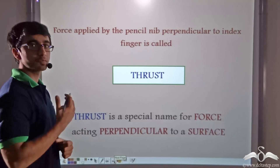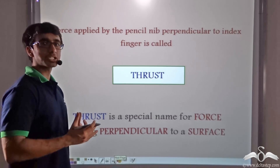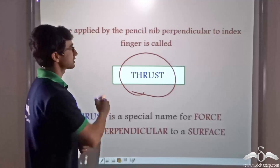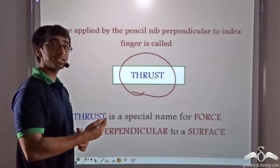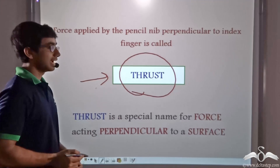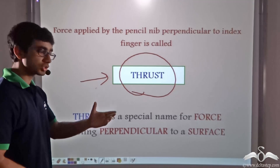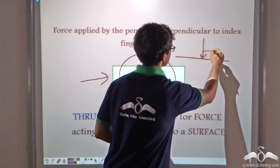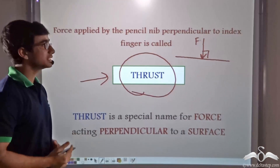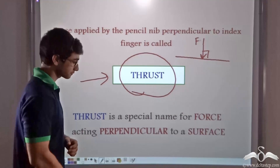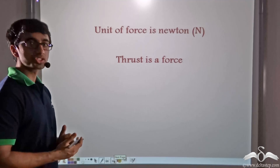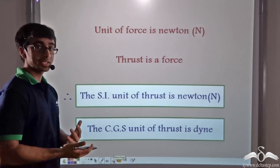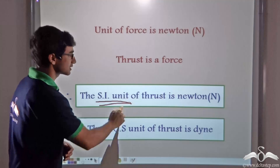This force that is perpendicular to your finger has a particular name. In fact, any force that acts perpendicular to any surface has a name, and that name is thrust. So the force applied by the pencil nib that is perpendicular to the index finger is also known as thrust. The SI unit of thrust is also Newton, since thrust is a kind of force.